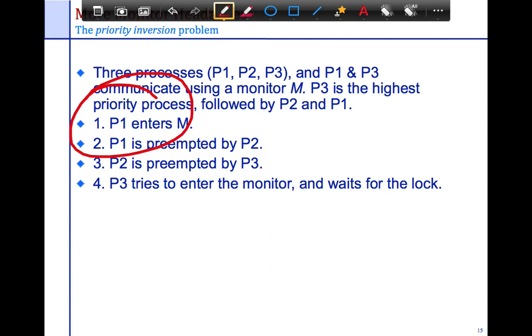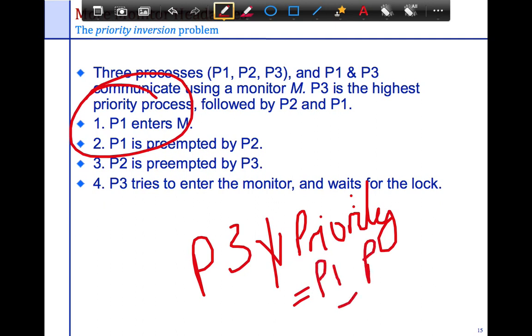A way to avoid this is by essentially downgrading P3's priority. So you either downgrade P3's priority, hence bringing it to the same level as P1 and P2 as long as it doesn't get the monitor, or you upgrade P1's priority. So increase its priority because it has the monitor. So increase the priority of the process that has the monitor.